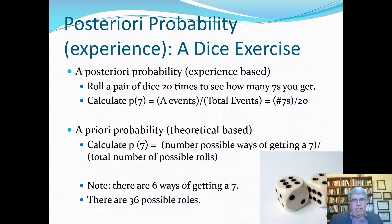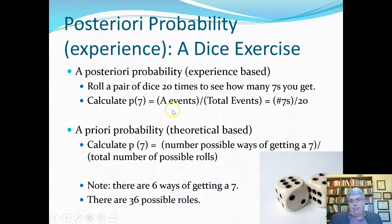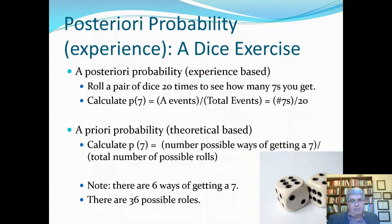A posteriori probability is based on experience — it's calculated after events happen. A priori is before; a posteriori is afterwards. For example, if we roll a pair of dice 20 times and count the 7s, we calculate the probability from what actually occurred. If we got 6 sevens out of 20, the probability would be 6/20. If we got 10, it would be 10/20. The more times we repeat the experiment, the closer we get to the a priori probability.